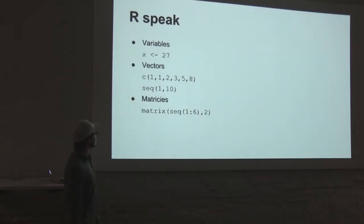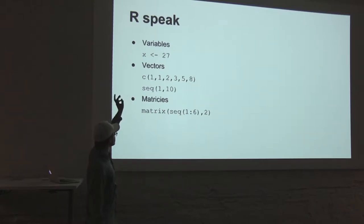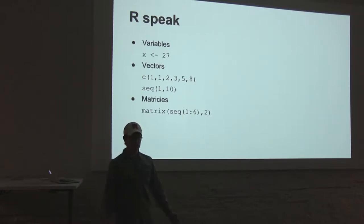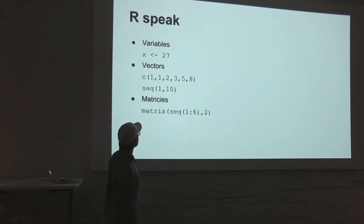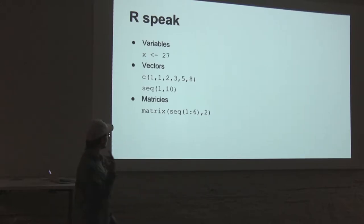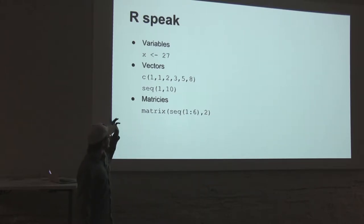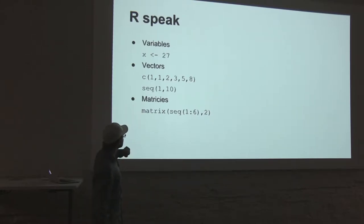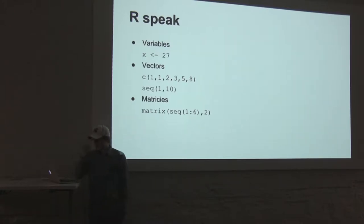Some of the terminology that R uses: variables — they call them variables, and this is the variable assignment syntax, which is equivalent to x equals 27 in Ruby. Just like in Ruby where you can do x plus 1, you can do x plus 1 with that too. Vectors are just arrays — they call them vectors because they want to make things confusing. When you define a vector, you do it with a c() and that is your vector. You can also do a sequence, which is nice.